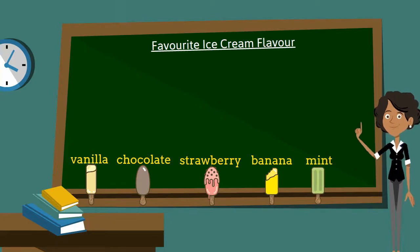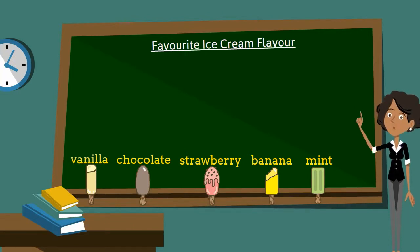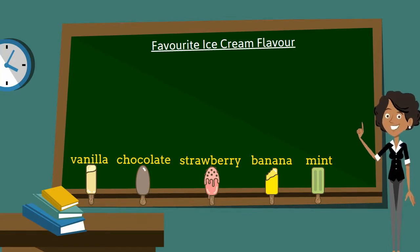Now let's get the children to put cubes under their favorite ice cream columns. Yetunde likes vanilla, Trisima likes vanilla, Glory likes banana, Smile likes strawberry.